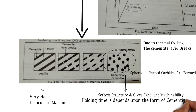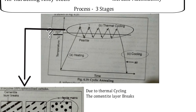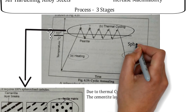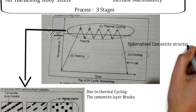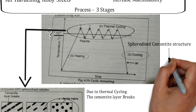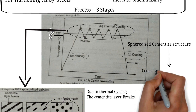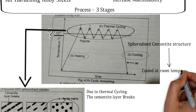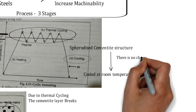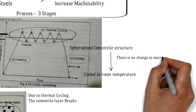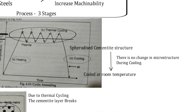The holding time for cyclic annealing depends upon the form of cementite. In the final cooling stage, the spheroidized cementite is cooled at room temperature. There is no microstructure change occurring during the cooling stage.